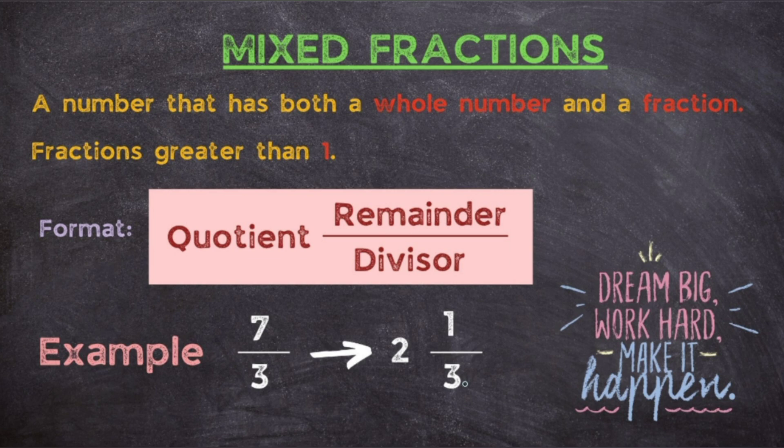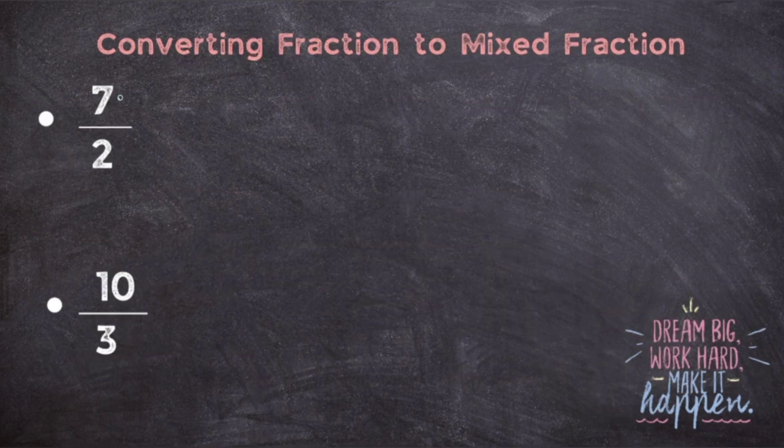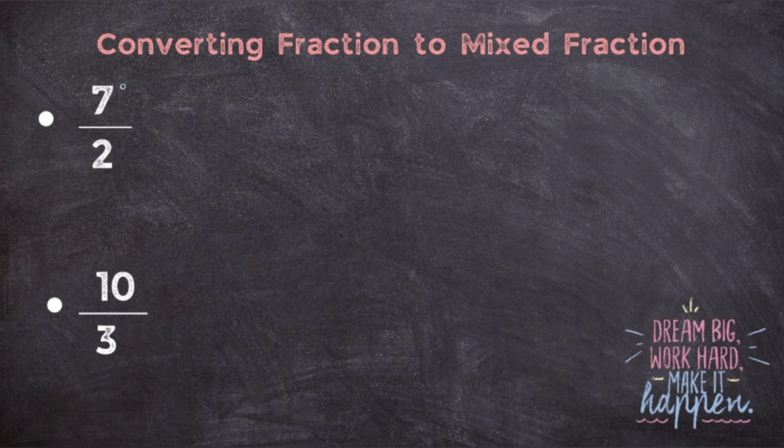So how to find it? We will be learning now. Let us see, you have given the fraction 7 upon 2, where 7 is a big number which is in the numerator and 2 is a denominator which is a smaller number compared to the numerator.